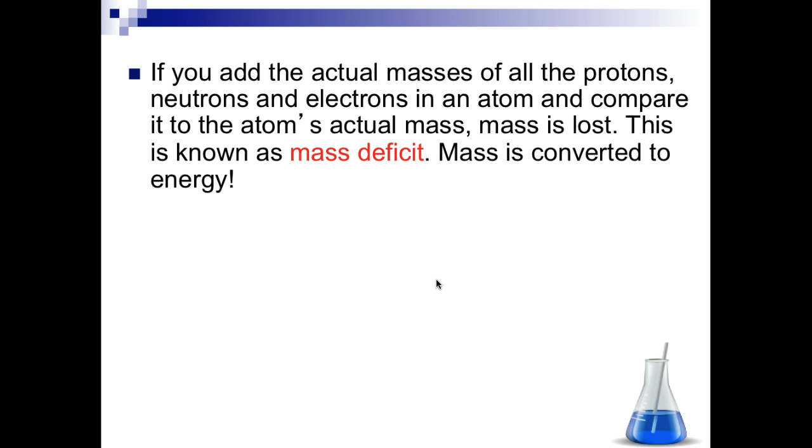If you add the actual masses of all the protons, neutrons, and electrons in an atom and compare it to the atom's actual mass, mass is lost. This is known as mass deficient. The mass is not officially lost though, because we have the law of conservation of mass that says mass cannot be created nor destroyed. It'll just change forms.